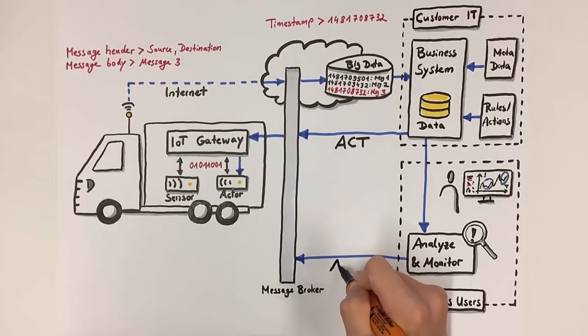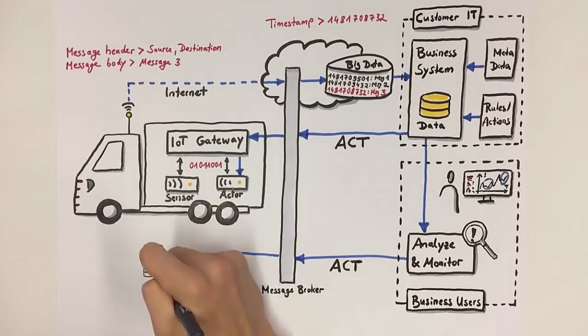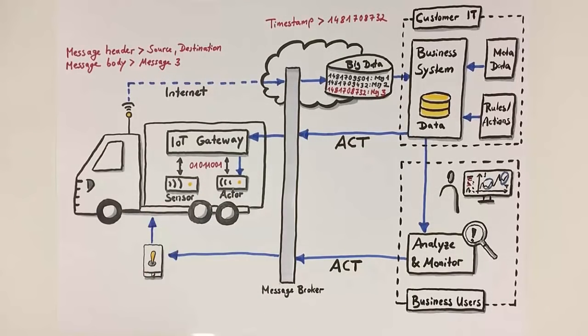This is proposed to the dispatcher, who could send this new route to the truck driver. Another possibility is to automate this step so that the truck driver is given the new route directly without the involvement of a dispatcher.